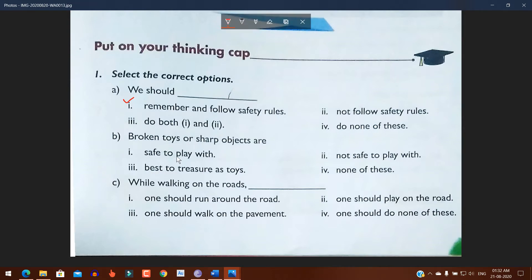Number B: Broken toys or sharp objects are: number one, safe to play with; number two, not safe to play with; number three, best to treasure as toys; number four, none of this. The answer is number two: not safe to play with.